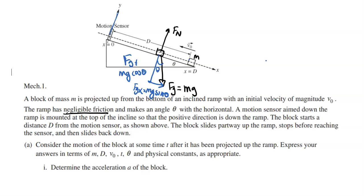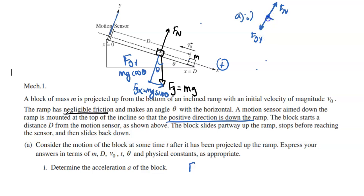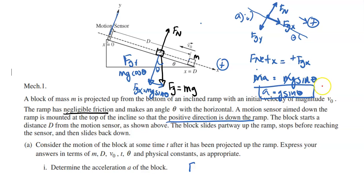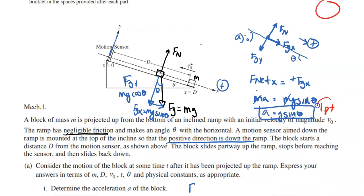For the acceleration of the ramp, they're saying the downwards direction is positive. So we have F_net: MA = FGX. We found FGX to be MG sinθ. The M's cancel, and we're left with A = g sinθ. According to the AP rubric for this one, you get one point for the answer, and that answer must be positive. Make sure your answer is positive if you're going to get the point.